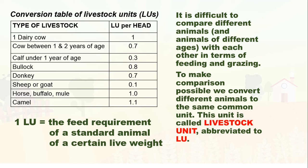It is important to have knowledge in the conversion of livestock units because one LU denotes the feed requirement of a standard animal of a certain live weight. With the introduction of the livestock unit, we can compare the feed needs of sheep, goat, calves, and other animals with those of dairy cows. To express different animals and their ages in LUs, we have a livestock unit conversion table.